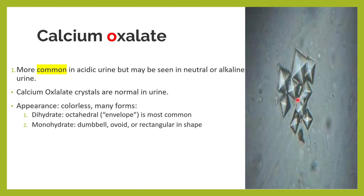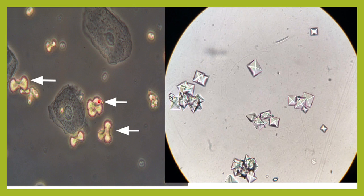Calcium oxalate crystals are colorless and they exist in two forms: a monohydrate form and a dihydrate form. The monohydrate form is dumbbell shaped, and the dihydrate form is the envelope shaped form of calcium oxalate.